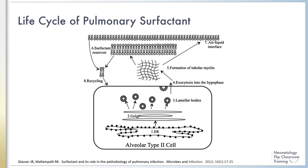The lamellar bodies undergo exocytosis into the alveolus, where they form the structure of tubular myelin — a lattice-like structure made up of blocks of phospholipid lined with surfactant proteins. Tubular myelin is then utilized in maintenance of the surfactant reservoir or is reorganized to form a bipolar monolayer of phospholipids and proteins in the alveolus, which constitutes the surfactant film. Compression of this film allows some components — the unsaturated lipid and protein components — to be pushed out, resulting in concentration of the saturated phosphatidylcholine. Prior to birth, the alveolar pool is composed primarily of lamellar bodies and tubular myelin.